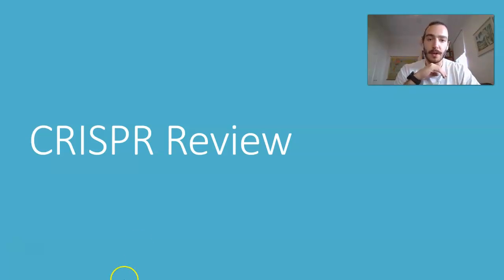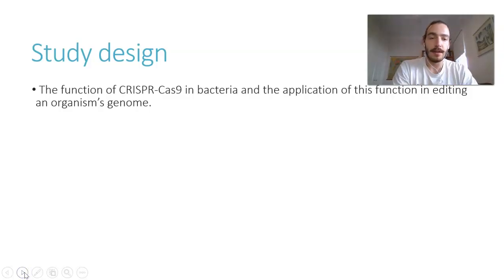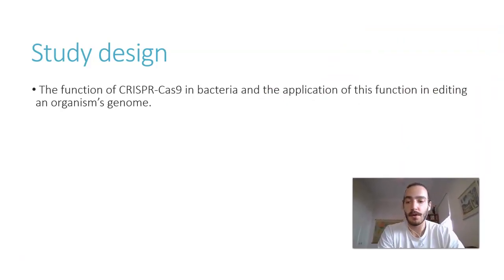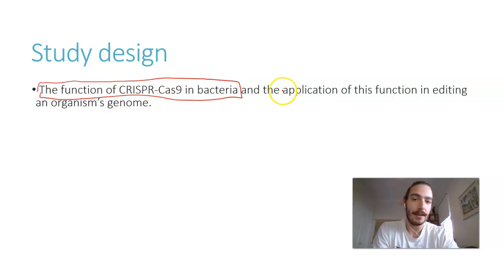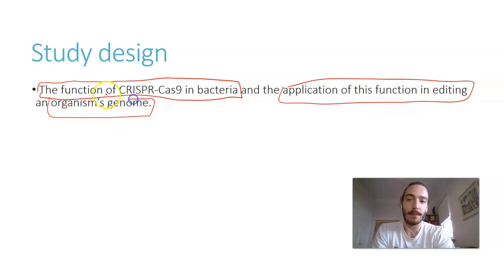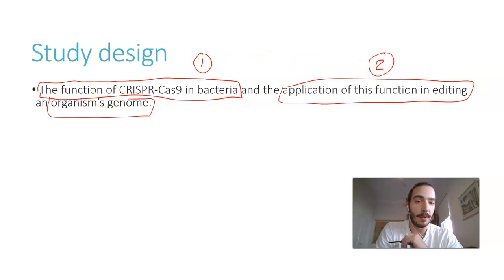We're going to look at the first slide, which is the study design: the function of CRISPR-Cas9 in bacteria, and the application of this function in editing an organism's genome. So let me just get my pen up. We've got the function of CRISPR-Cas9 in bacteria as our first thing, and the application in editing a genome as our second.